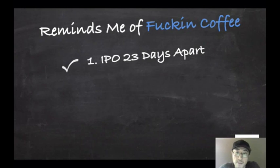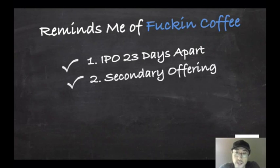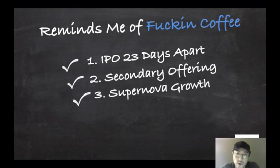Some of the similarities here. First, this company also IPO'd in 2019, just 23 days apart from Luckin Coffee's IPO. It also did a secondary offering just a few months after its initial public offering. This one actually sold more stock in their secondary, and 100% of the proceeds for their secondary offering actually went to existing equity holders.